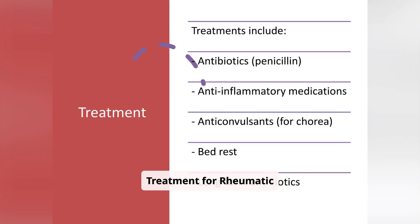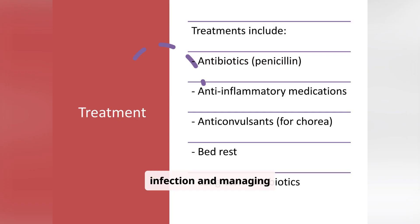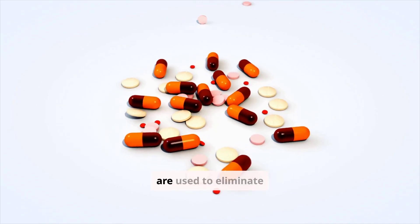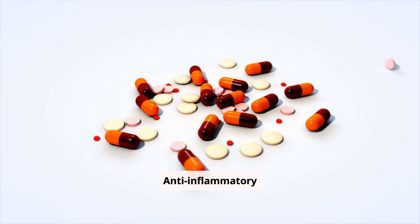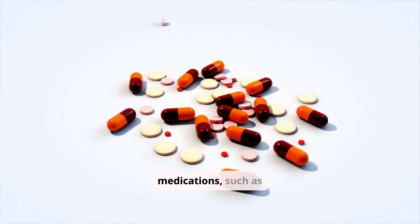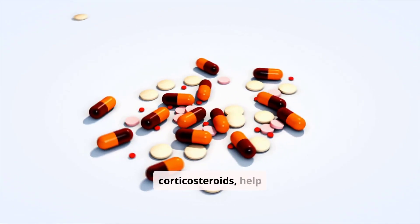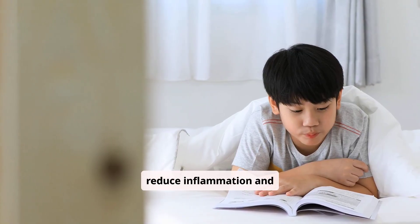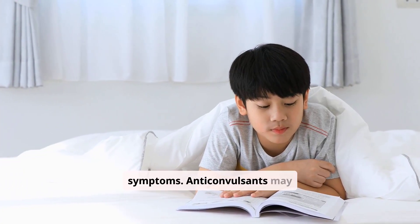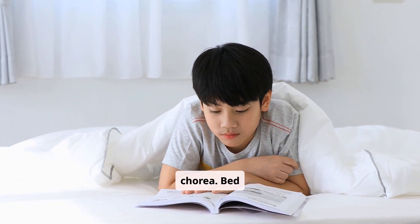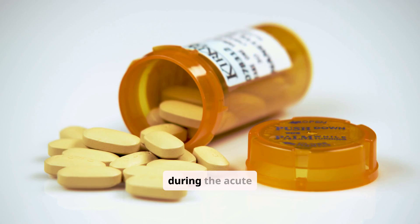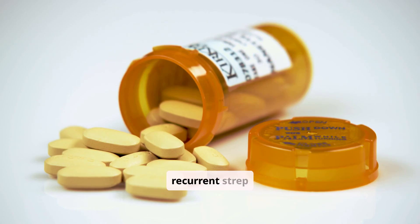Treatment for rheumatic fever focuses on eradicating the underlying strep infection and managing inflammation. Antibiotics, particularly penicillin, are used to eliminate the bacteria. Anti-inflammatory medications, such as aspirin or corticosteroids, help reduce inflammation and alleviate symptoms. Anticonvulsants may be prescribed to manage chorea. Bed rest is often recommended during the acute phase. Long-term antibiotic prophylaxis is crucial to prevent recurrent strep infections and further heart damage.